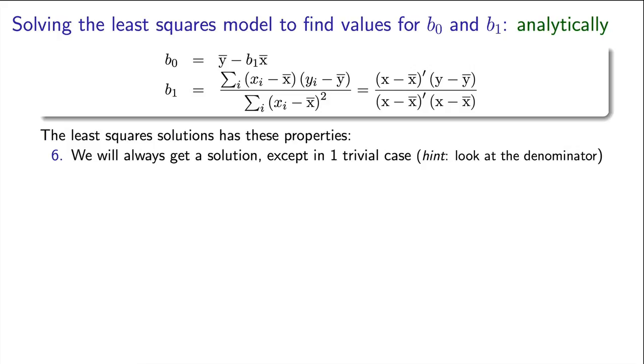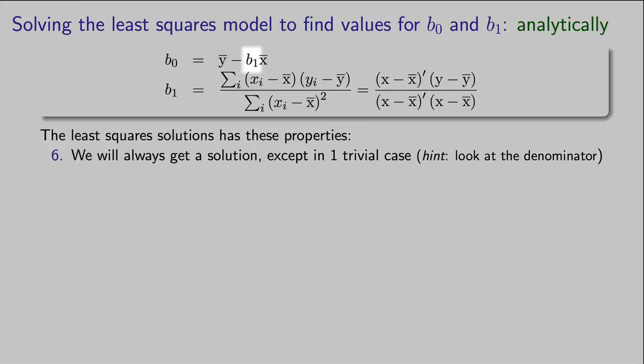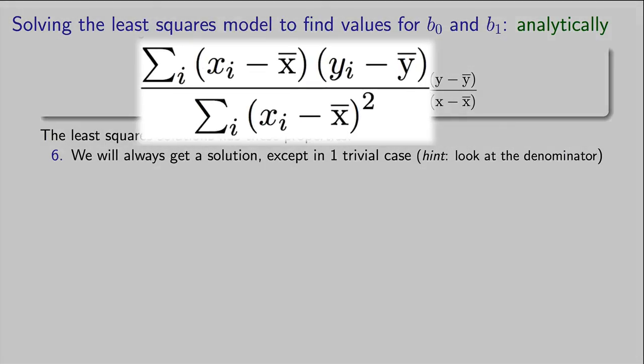Probably never, and here's the reason for it. If you look at the formula for b0 and b1, you can see that b0 can always be calculated as long as we have a value of b1. And b1 can always be calculated as long as this denominator is not equal to zero.